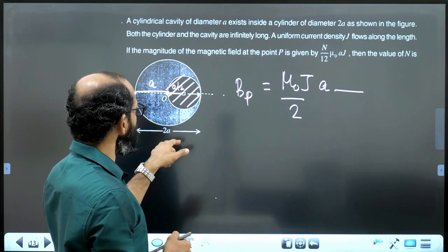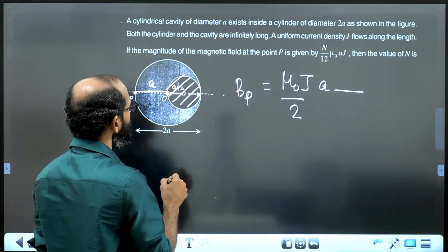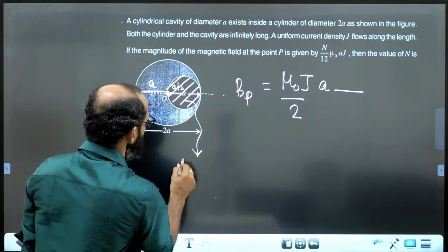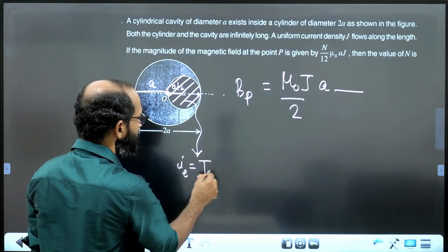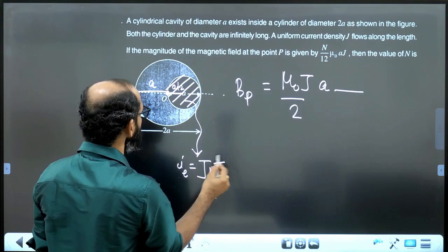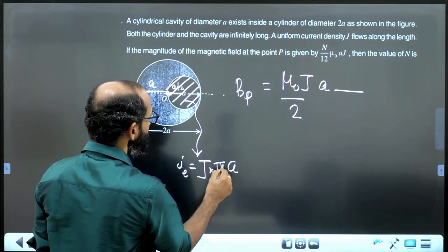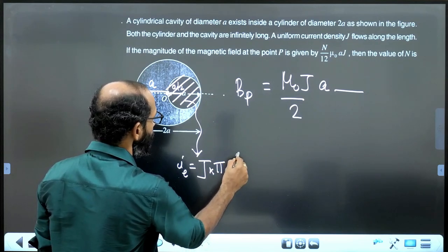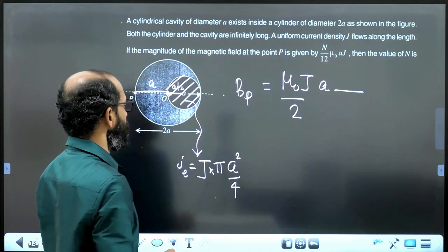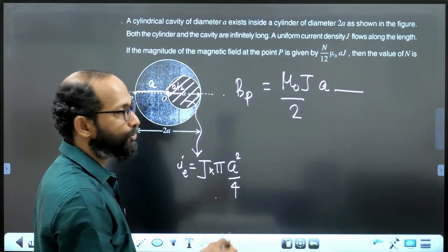But in this case, the current enclosed is equal to current per unit area multiplied by area enclosed. What is the area enclosed? Pi into A by 2 all square, that is pi A square by 4. That is the thing to be taken in mind.